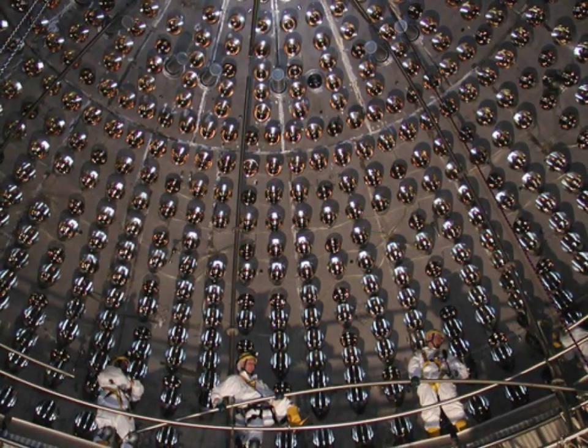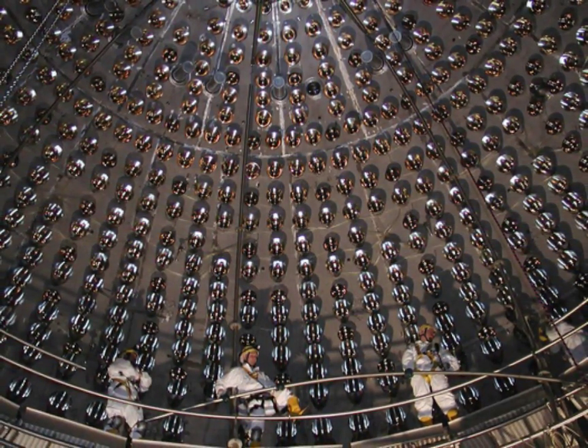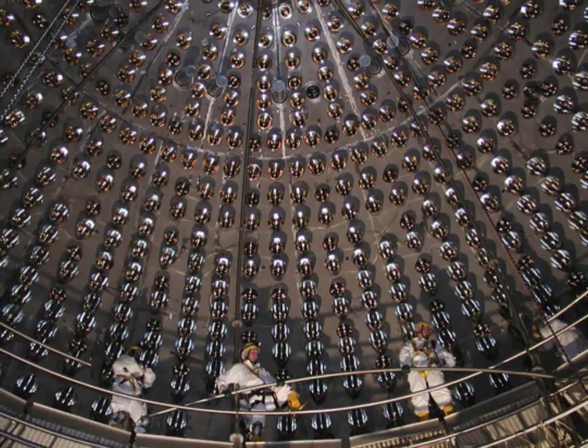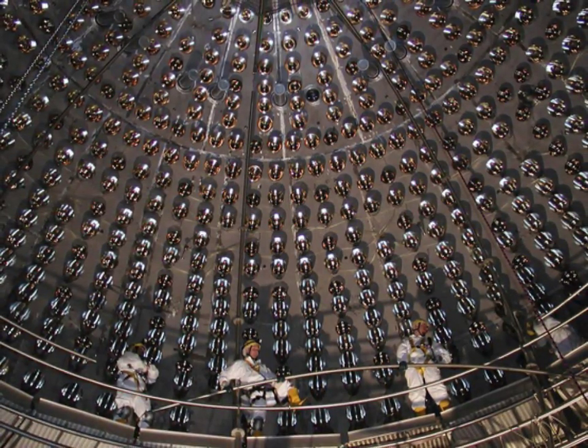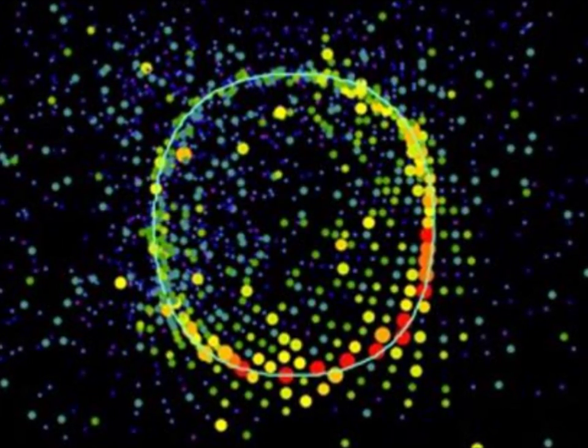The number of electron neutrinos observed on Earth are too low to be consistent with the total number leaving the sun. The SNO team detected electron, muon, and tau neutrinos to directly demonstrate the flavor changes. They showed that neutrinos from the sun do change flavor or oscillate from one type to another before reaching the Earth.